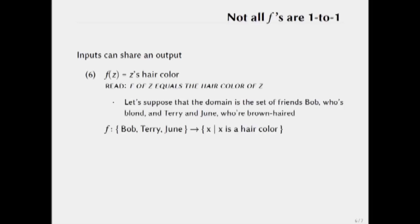So let's suppose that the domain in this example is small. It has the set of friends, Bob who's blonde, Terry who's brown-haired, and June who's brown-haired. So we can take this function f and it maps from the set of the domain, the set of Bob, Terry, and June, to the set of x such that x is a hair color. That is to say, from this set of people to the set of hair colors.